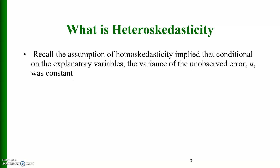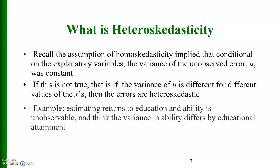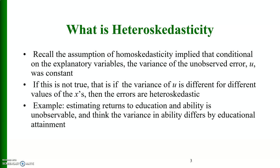Let me start with the assumption of homoscedasticity used in the classical linear regression model, which implies that conditional on the explanatory variables x, the variance of the unobserved error u is constant. If this is not true — if the variance of u varies across values of the x variables — then the errors are heteroscedastic. An example includes estimating returns to education where ability is unobservable.